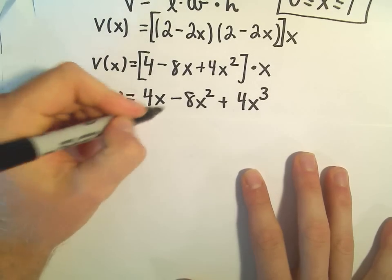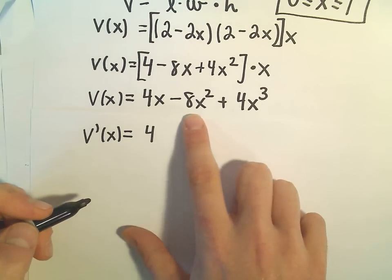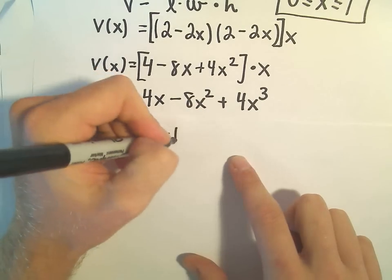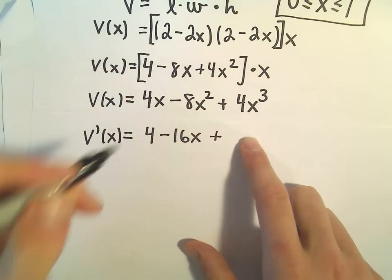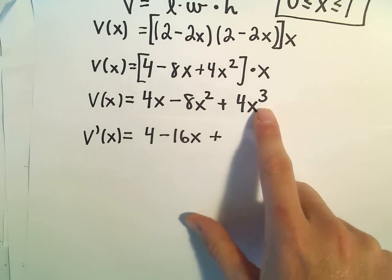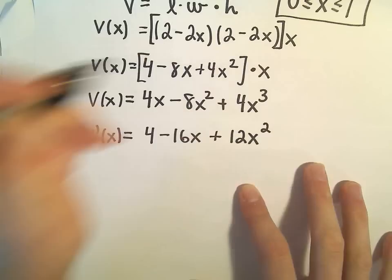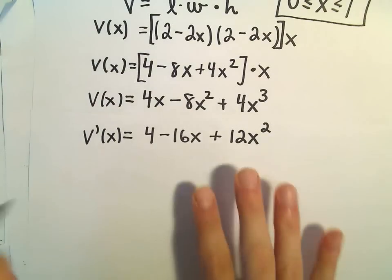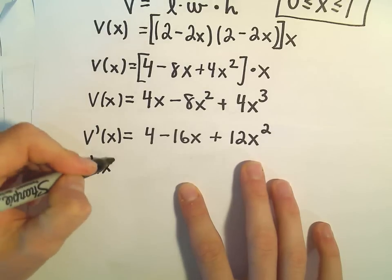So V prime of x, the derivative of 4x would just be 4. The derivative of negative 8x squared, the 2 will come out front, we'll get negative 16x. 3 times 4—what is 3 times 4? Let's see, 2 times 4, what am I saying? 3 times 4 is just 12. It's very early here. So 12x squared. I was thinking of exponents for some reason. So V prime of x.